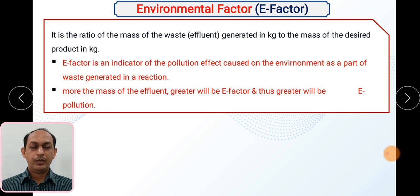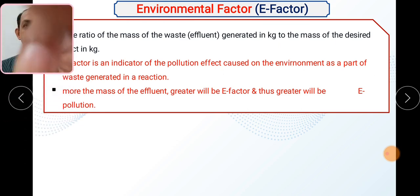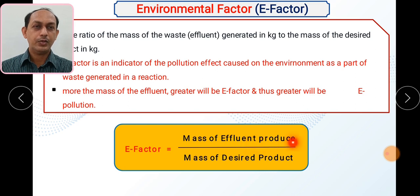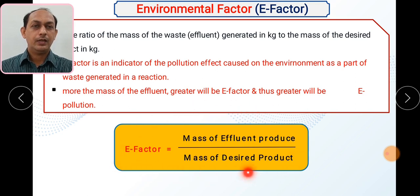The E factor gives us information about whatever waste is accounted as a pollutant produced inside the reaction. If the mass of effluent is greater, the E factor will be greater and so will the environmental pollution. If you want a good green synthesis, your E factor must be nearer to 0 or almost 0. The formula is: E factor = mass of effluent (waste produced) divided by mass of the desired product.